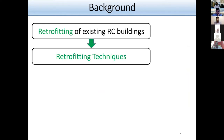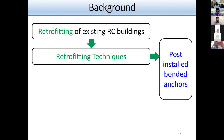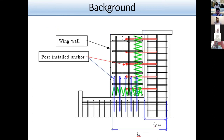Among the available retrofitting techniques, post-installed bonded anchors are one of the key elements to retrofit existing buildings. They connect existing RC buildings with newly installed strengthening members in order to transmit loads smoothly. This photo shows the application of post-installed bonded anchors in retrofitting an existing wing column joint with a wing wall.